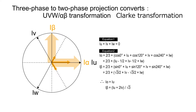At this time, set the U-axis and alpha-axis to the same axis. When coordinate transformation is simply performed from three-phase current into two-phase, the result is 1.5 times. Thus, multiply the value by a factor of two-thirds, and this is the final value of I-alpha and I-beta.